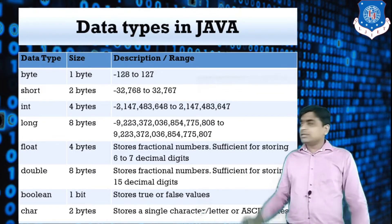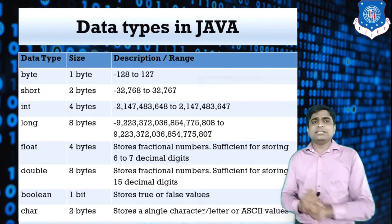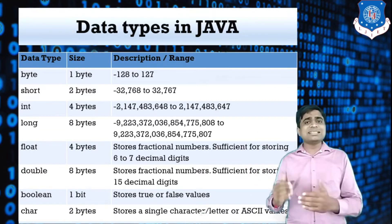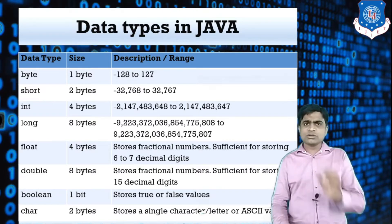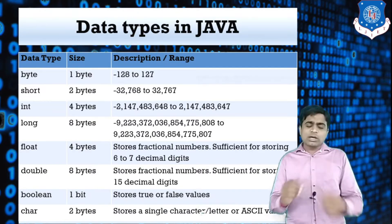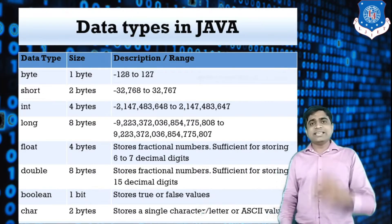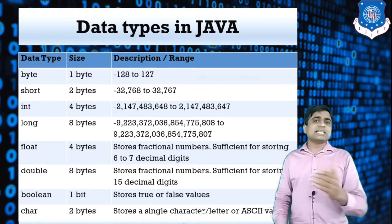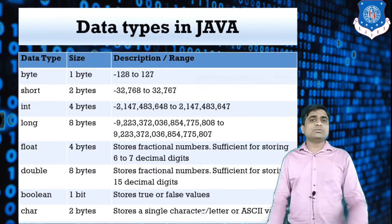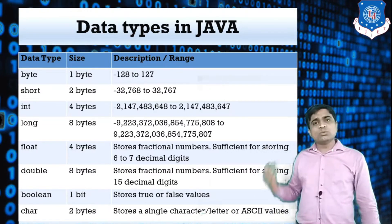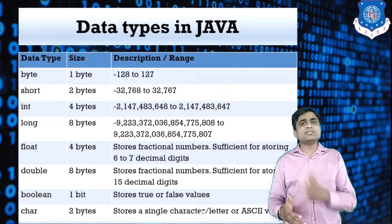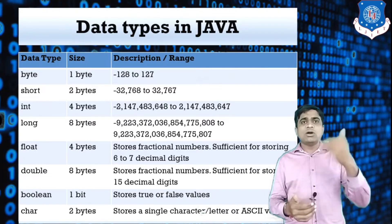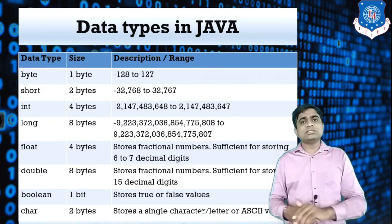The different data types available in Java: the first is byte. Byte, short, and integer are similar data types for integer values, but the only difference between these three is their range and size. Byte is 1 byte, short is 2 bytes, and integer is 4 bytes. The range also differs between these three.